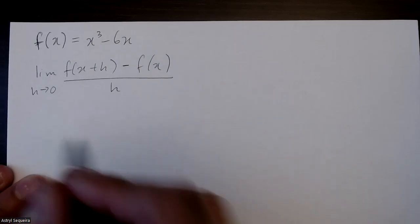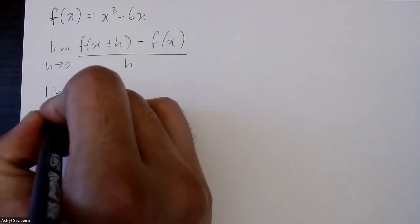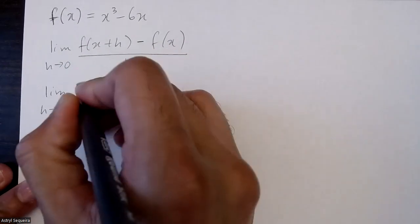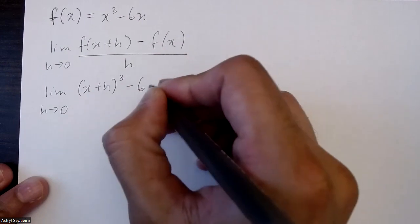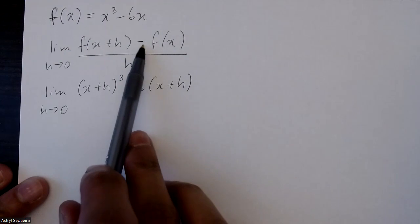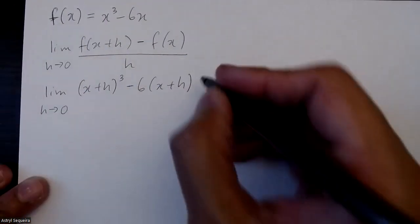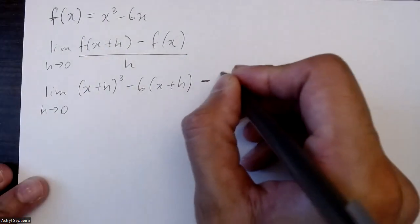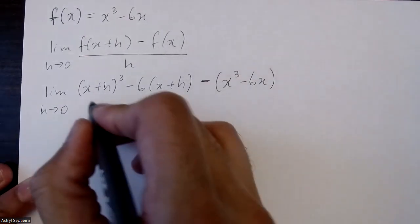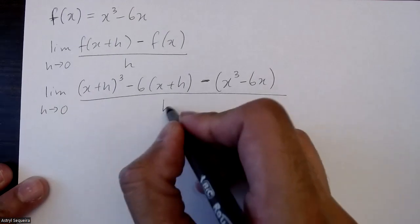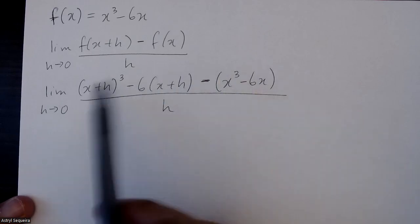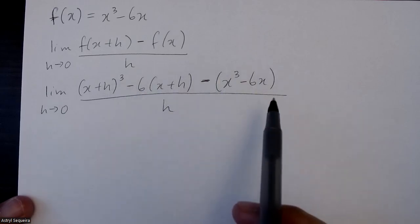So we have lim h approaches 0 of (x+h)³ minus 6(x+h) — that's f(x+h) — then subtract f(x), which is the original function. Make sure to put it inside a bracket. Then divide everything by h. For any simple algebraic expression we just have to simplify the top, combine like terms, and simplify further.